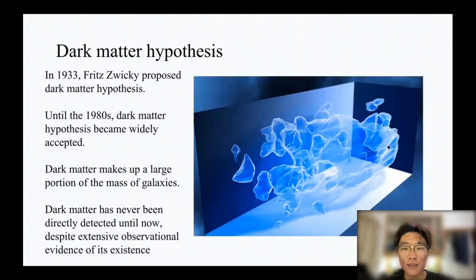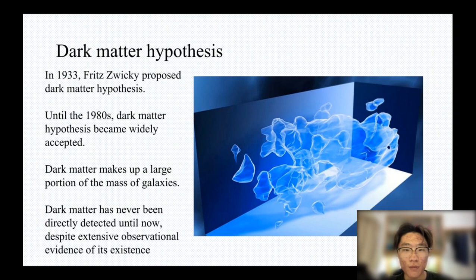In 1933, Fritz Zwicky proposed the dark matter hypothesis. He found that the velocity dispersion of the galaxies in the cluster was too high for the gravitational pull from the mass of the visible galaxies in the cluster alone to hold them inside. So there should be a lot of dark matter in the cluster.